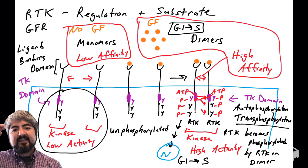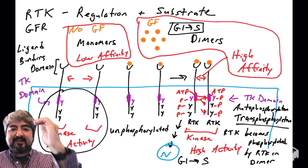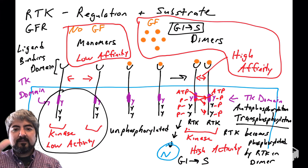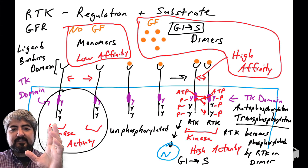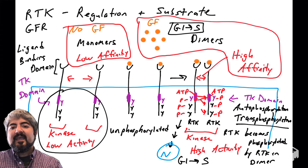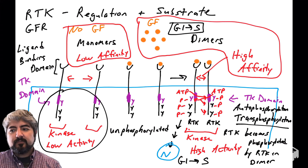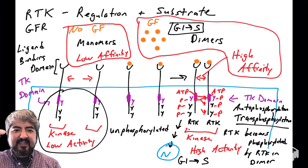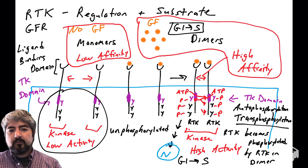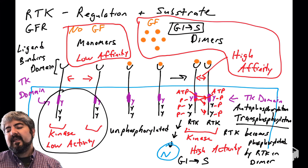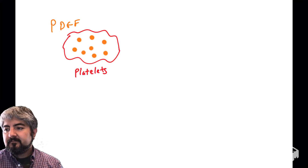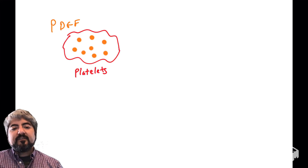Why are we learning about this? The big deal is that you have a signal that started outside the cell — growth factor binding growth factor receptor — that has changed something inside the cell. Growth factors bind receptors outside the cell, causing them to change shape, dimerize, transphosphorylate, and now you have phosphate groups attached to tyrosines inside the cell. That signal cascades all the way to the nucleus to tell the cell to go from G1 phase to S phase.